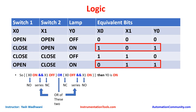Now let us see what logic is required for this programming. I have shown the switch and lamp on/off status represented as equivalent binary bits. Switch 1 is at position X0, switch 2 at X1, and the lamp is output Y0. Initially both switches are open, so the output should be off. From the ground floor, when I press switch 1, it will be in closed position and the other switch will be open — in this condition the output should be on.